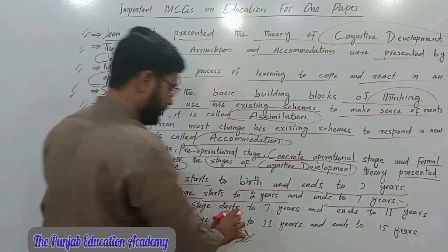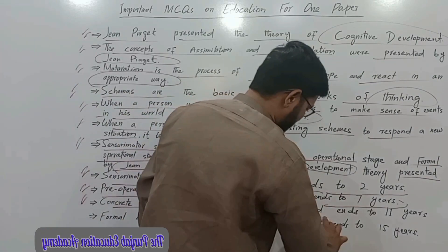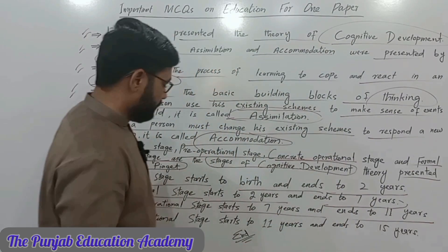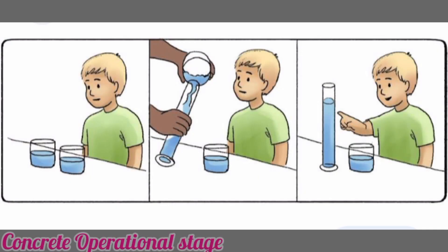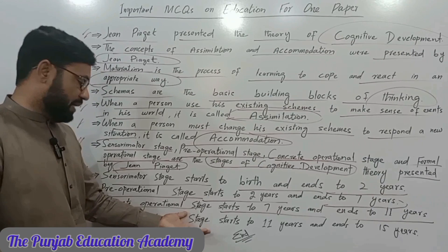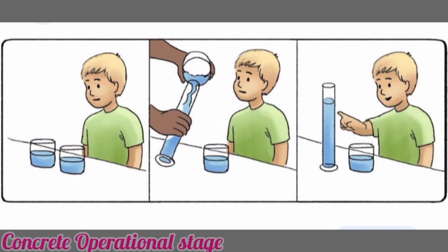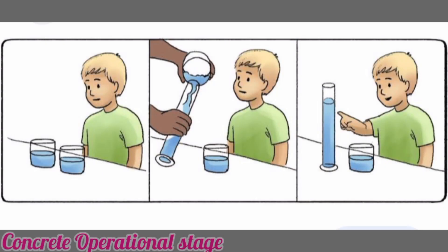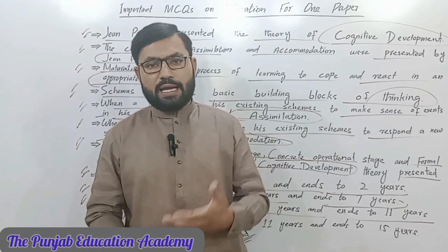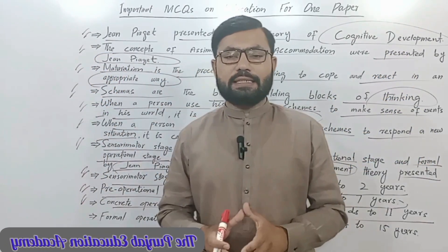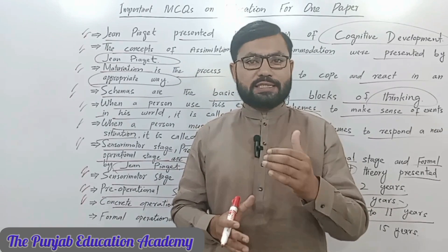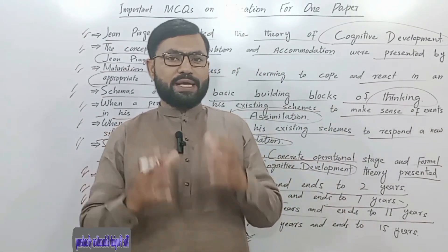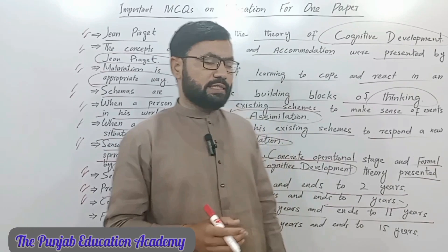The Concrete Operational Stage — the third stage of cognitive development presented by Jean Piaget — starts at seven years and ends at eleven years. Logical concrete thinking and transitivity are the main features of this stage.